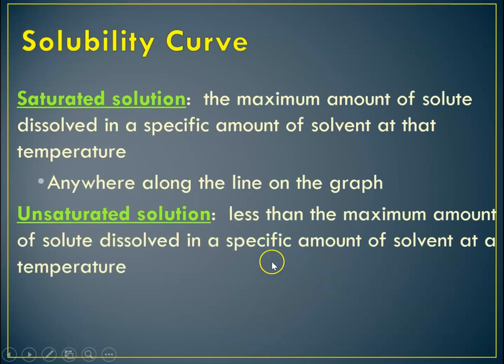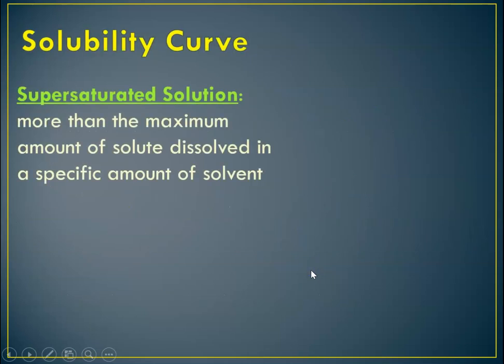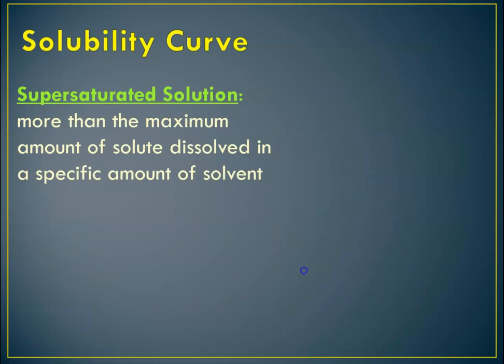So unsaturated is less than the maximum amount of a solute that you can dissolve at a specific temperature in a given amount of solvent. So again, anywhere below the line. And then finally, a supersaturated solution has more than the maximum amount of solute dissolved in a specific amount of solvent.